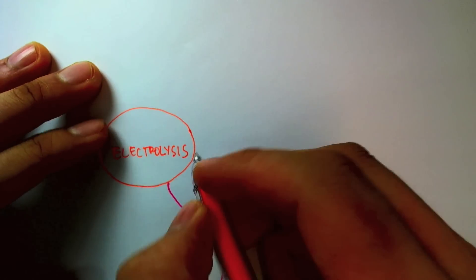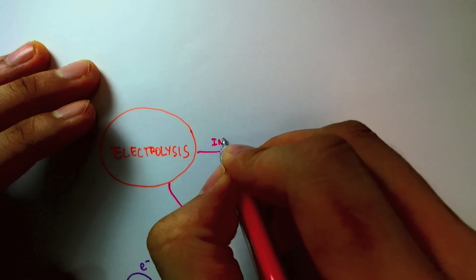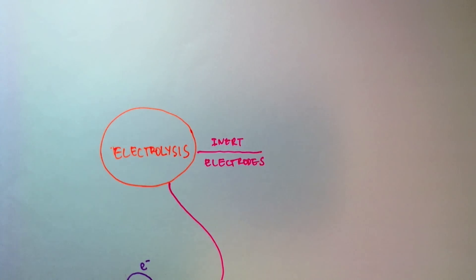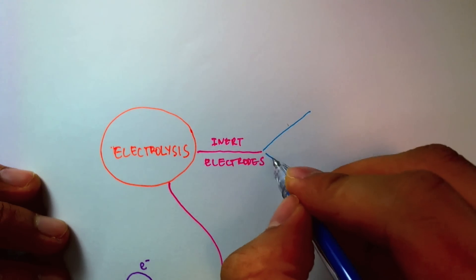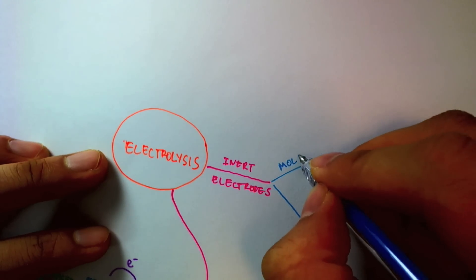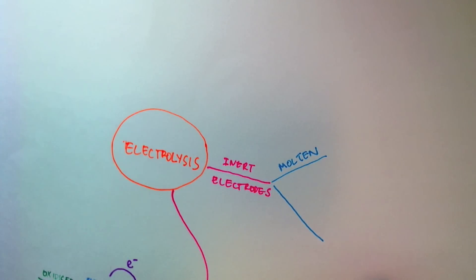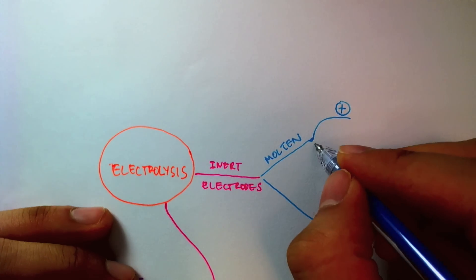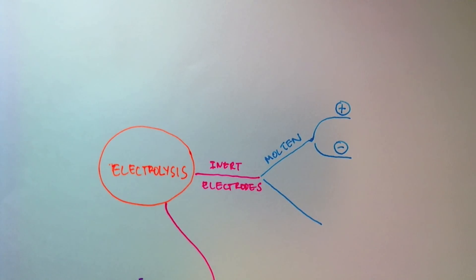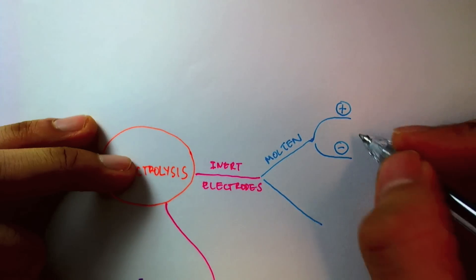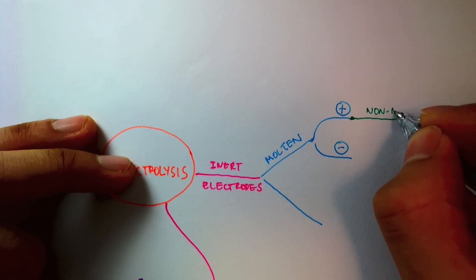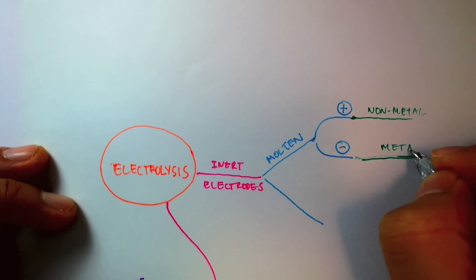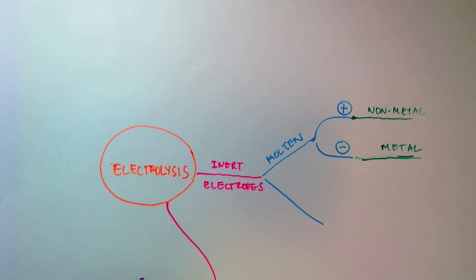So we started with the electrolysis using inert electrodes, where we had two possibilities. The simpler one being the electrolysis of molten substances, and I'll denote the anode using positive circle around it, and cathode using negative circle around it. And at the anode, what we saw was that the nonmetal was discharged, whereas at the cathode, the metal was discharged. So it was fairly straightforward for a molten substance.